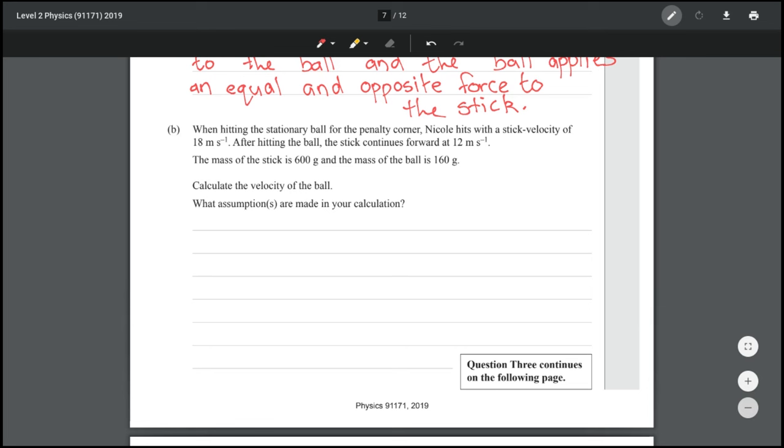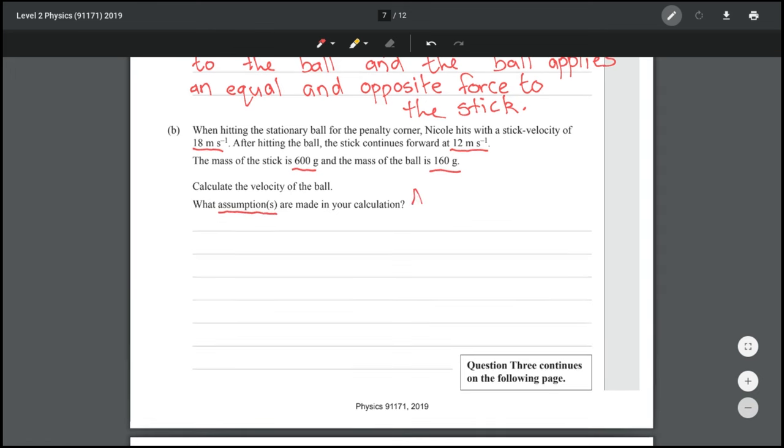When hitting the stationary ball for the penalty corner Nicole hits with a stick velocity of 18 meters per second. After hitting the ball the stick continues forwards at 12 meters per second. The mass of the stick is 600 grams and the mass of the ball is 160 grams. Calculate the velocity of the ball and also it wants us to explain the assumptions that are made in our calculation. And the assumption we'll of course make is that momentum is conserved. So this is a collision problem. We can consider the stick and the ball as just two objects which have an initial velocity, collide, and then finish off with some final velocity. When we look at their momentums we will assume that they equal and via that we should get a handy equation which should let us calculate the velocity of the ball. So the initial momentum is equal to the final momentum.